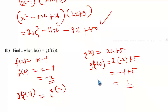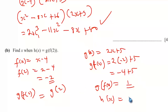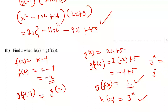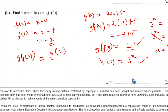We are told gf(2) equals h(x), and h(x) equals 3 to the power of x. So 3 to the power of x equals 1. Writing 1 as 3 to the power of 0, we get 3^x equals 3^0, so x equals 0.